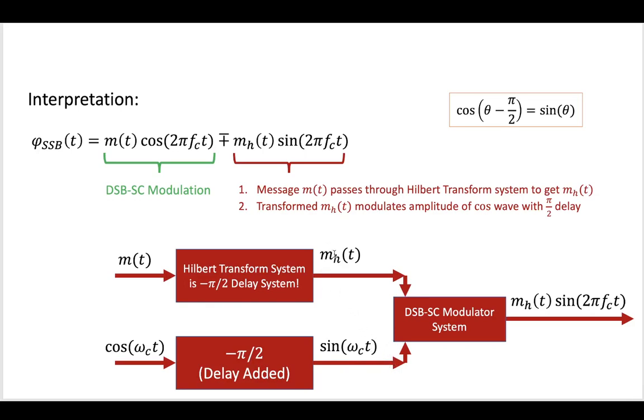Then you could pass the message and the sinusoid into our classic modulator, and this would be any of the modulation systems that we've previously learned about. At the output, you would have this Hilbert transform message being multiplied or modulated with this sinusoidal wave at our carrier frequency fc.